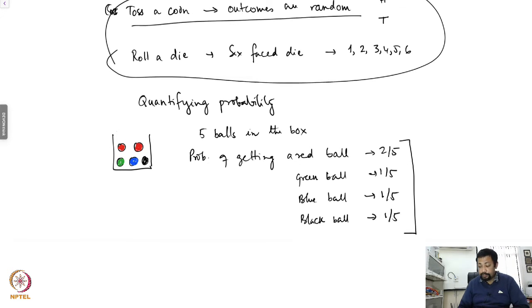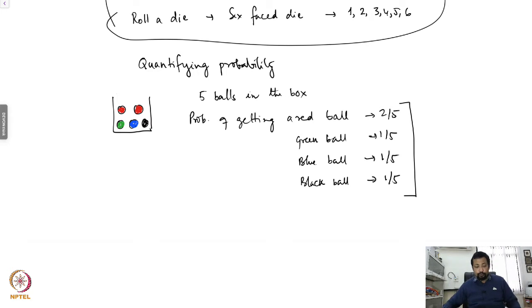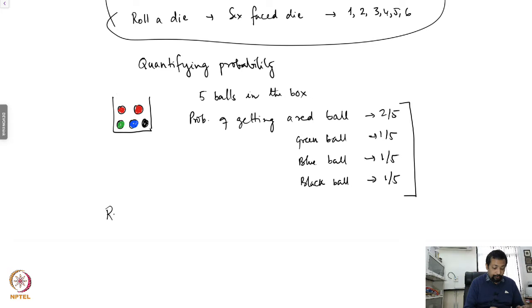Probability of getting a red ball is two out of five. Similarly, probability of getting a green ball is one out of five, probability of getting a blue ball is also one out of five, and probability of getting a black ball is again one out of five. This you are familiar with. So now we want to quantify this probability — what are called the rules of probability?